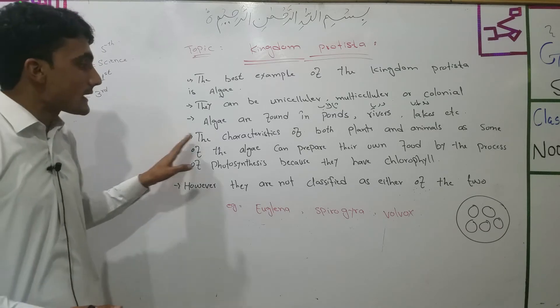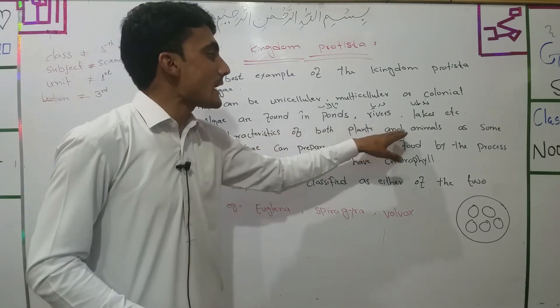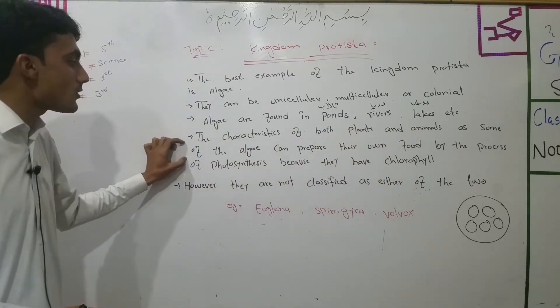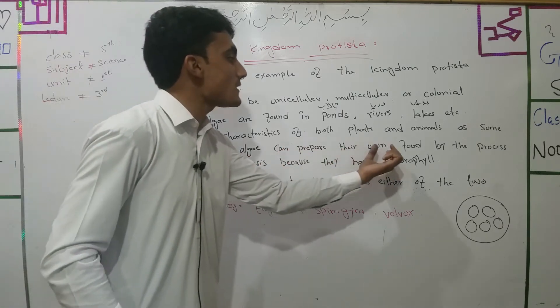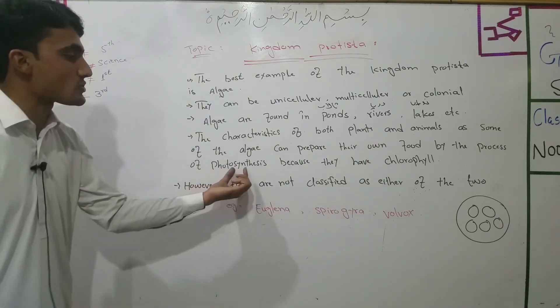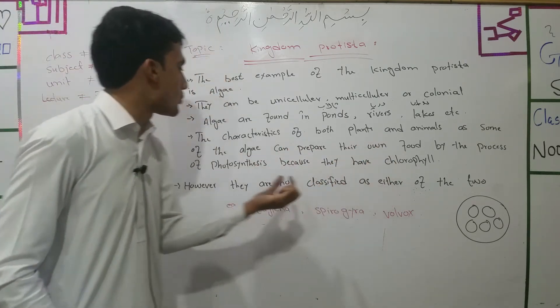The characteristics of both plants and animals are present in algae. Some of the algae can prepare their own food by the process of photosynthesis, because they have chlorophyll.